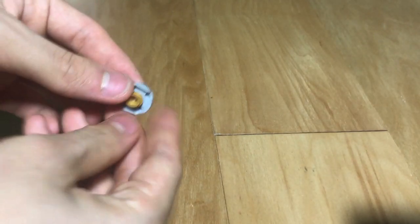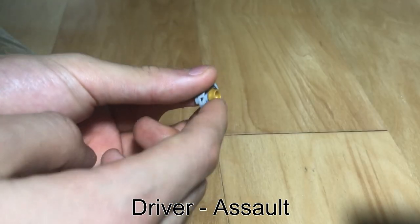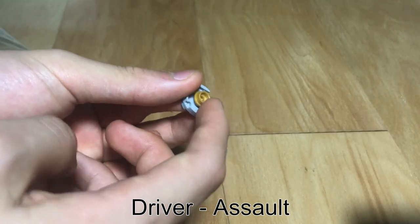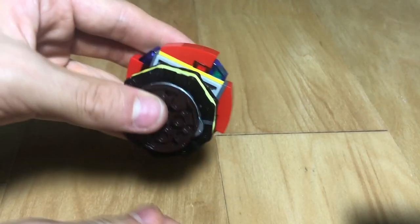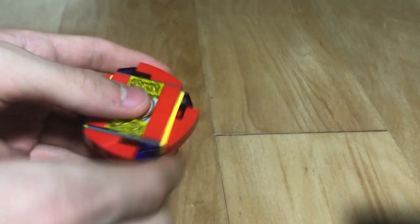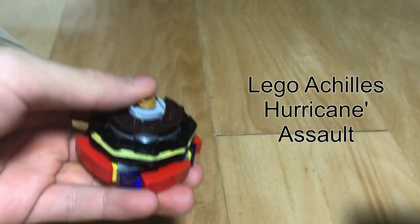And then finally we have our Driver Assault, which is just this regular flat LEGO plastic piece. It has pretty good stamina and pretty good attack. So putting the bay together, we have our first combo, LEGO Achilles Hurricane Dash Assault.